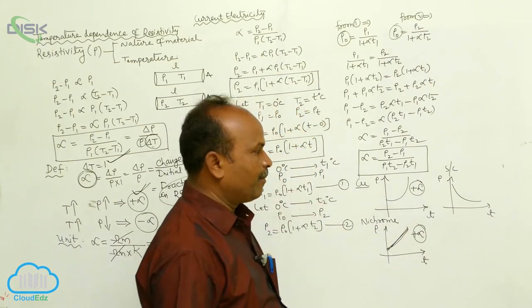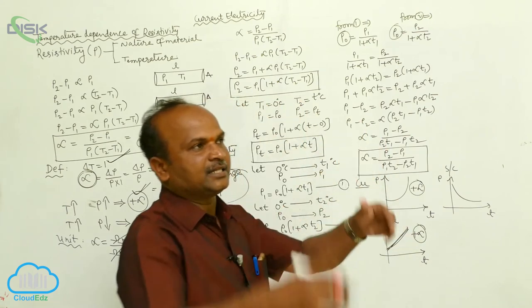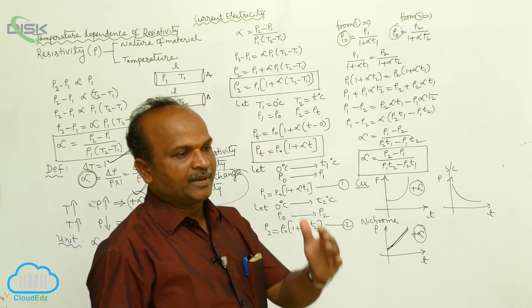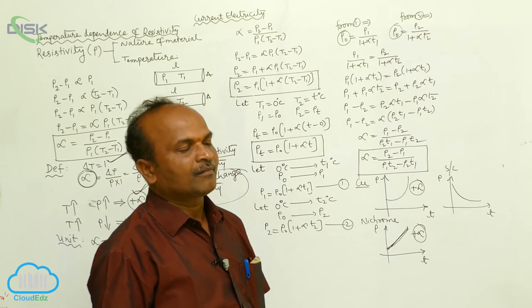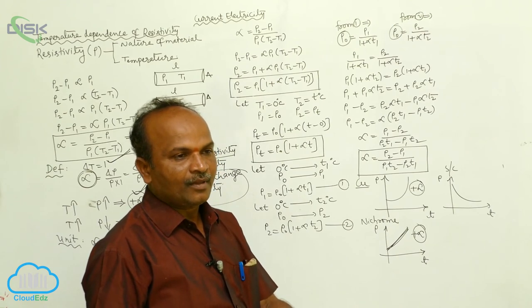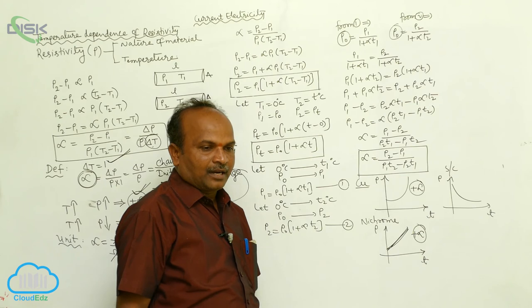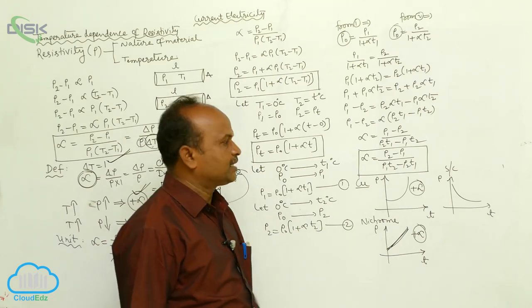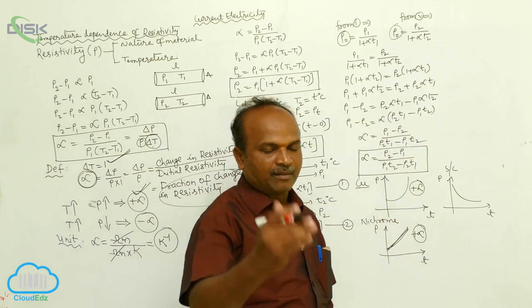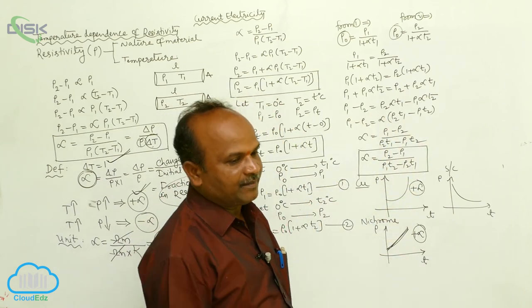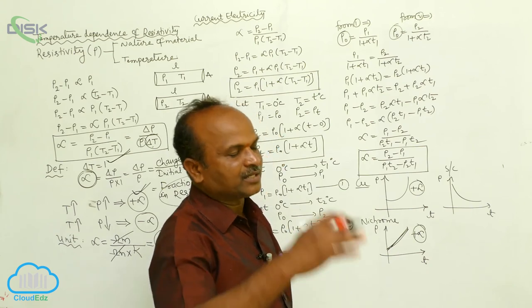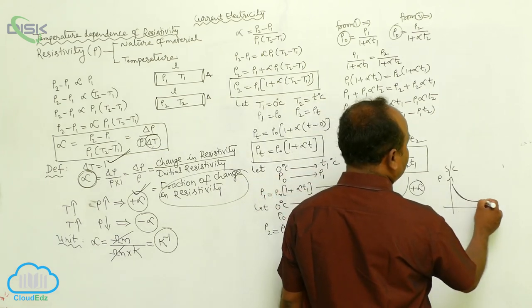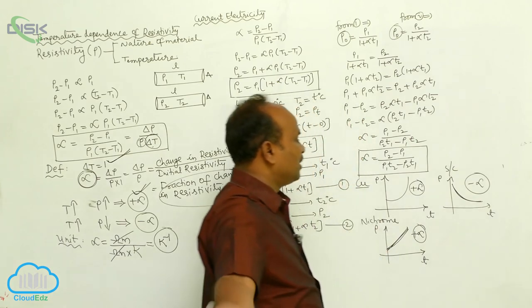In the case of semiconductors, as temperature is increased, resistivity decreases — this is called negative alpha. A semiconductor is a substance which allows current to flow partially. Examples of semiconductors are silicon and germanium. For silicon and germanium, as temperature increases, resistivity decreases, giving a negative temperature coefficient of resistivity.